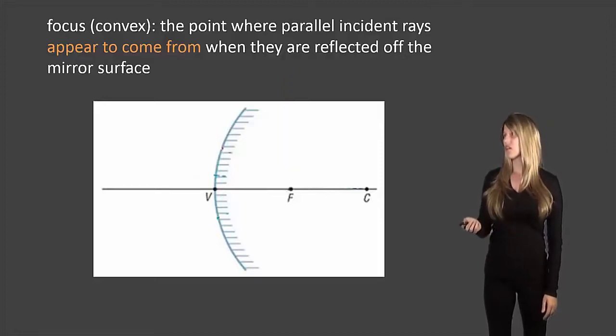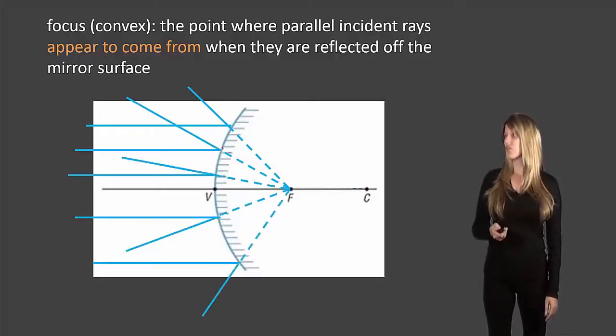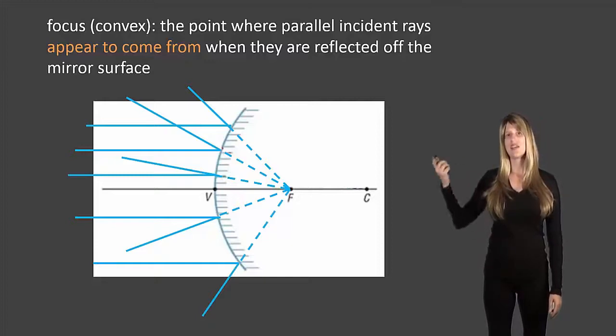So let's see how that looks. So here we have an incident ray. It looks as if it came from the focus. And each of these rays the way that they reflect off of the mirror is as if they came from that focus.